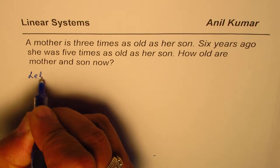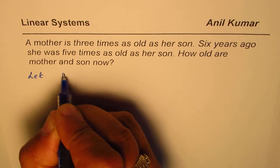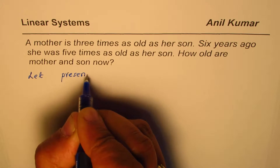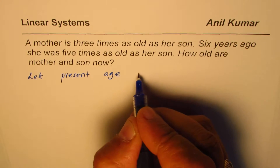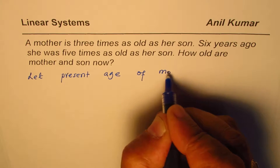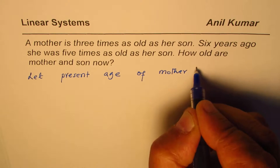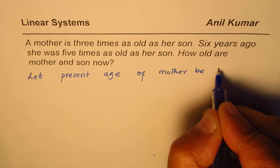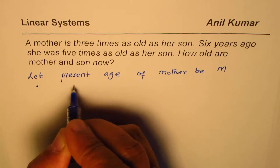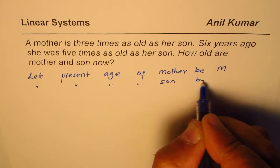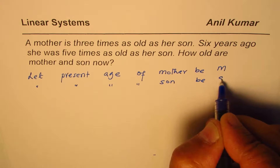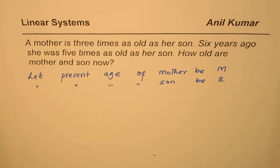First, write down the let statement. Let the present age of mother be m, and let the present age of son be s. Use the let statement to define the variables.